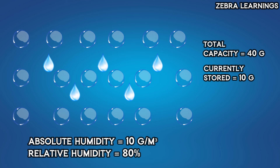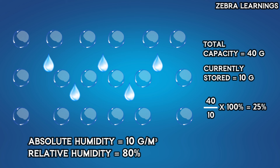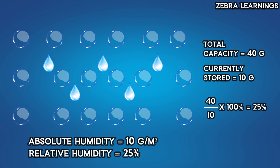Now let's measure the relative humidity. When the area could hold up to 20 grams of water vapor and contained 10 grams, the relative humidity was 50%. But now, since the temperature increased and the air expanded, it can hold up to 40 grams of water vapor. So in this area that can hold 40 grams, there are only 10 grams present. That means only 25% of the water vapor capacity is filled. Therefore, the relative humidity value is 25%. When the temperature increases, the relative humidity value decreases, and when the temperature decreases, the relative humidity value increases.